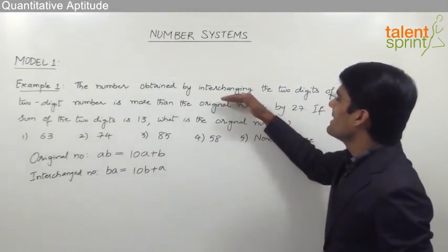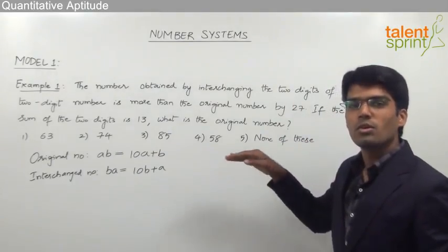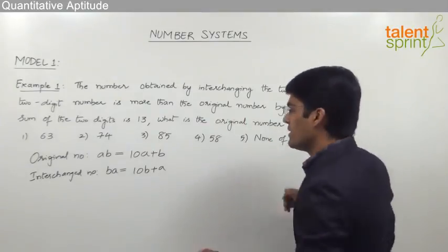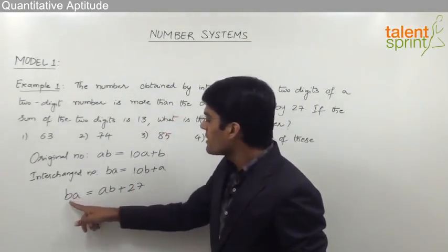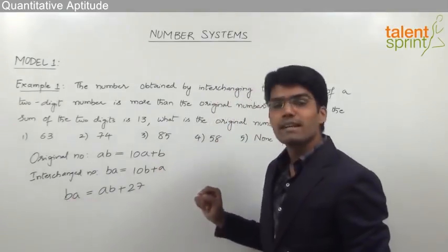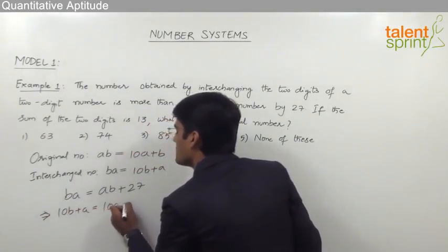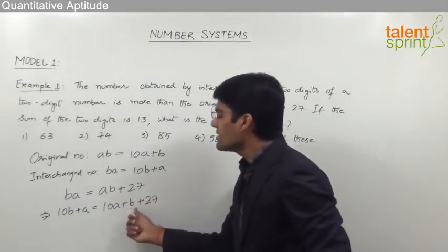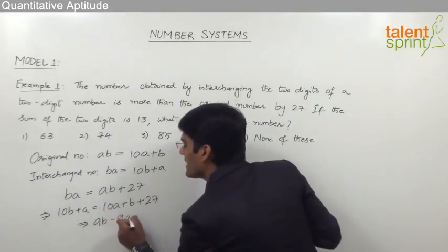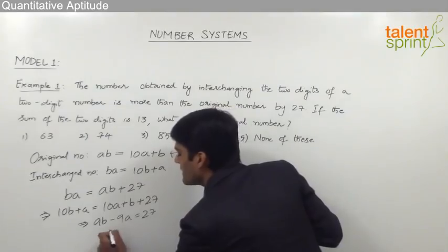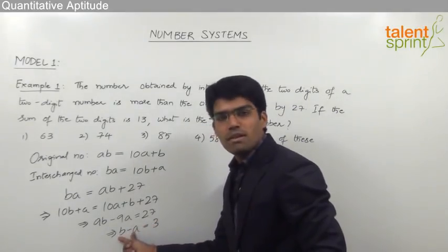As given, the interchanged number BA is more than the original number by 27, so BA equals AB plus 27. Substituting: 10B plus A equals 10A plus B plus 27. Simplifying, 10B minus B is 9B, and A minus 10A is negative 9A, giving 9B minus 9A equals 27. Taking 9 as common, B minus A equals 3. So the difference of the two digits is 3.